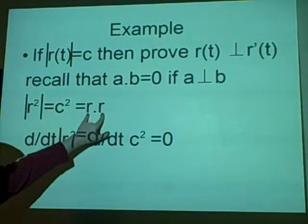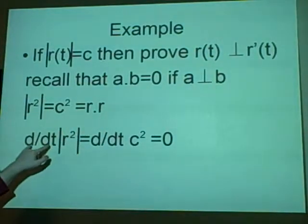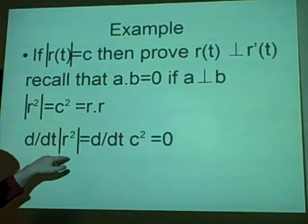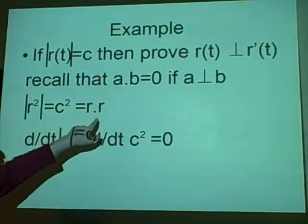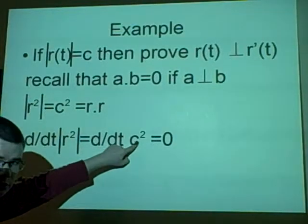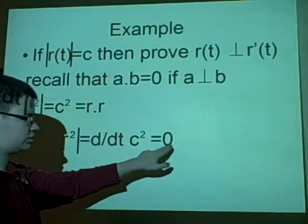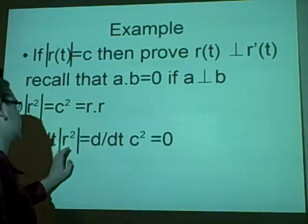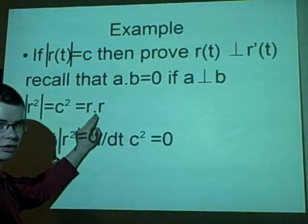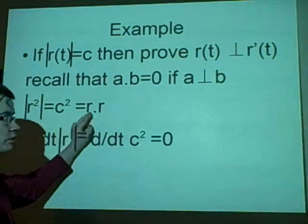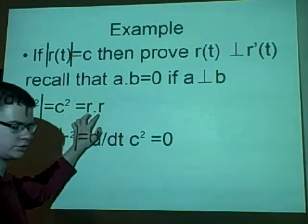And this is also equal to r·r, because r² is r times r. Now, the derivative of r² is the derivative of c², because they're the same. And the derivative of c², because it's a constant, is zero. Now, r² is also, as we've just said here, equal to r·r. And the derivative of that is something we have to do using the product rule, which we used in an earlier question.